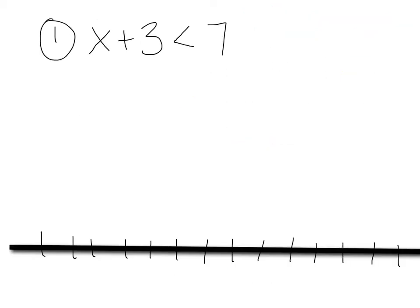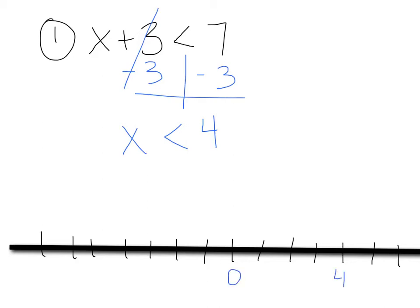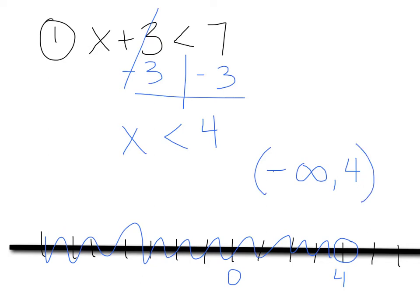Let's try some. This first one: x plus 3 is less than 7. We're going to solve this the same way we solved our equations. The opposite of plus 3 is to subtract 3 from both sides. You get x — we don't do anything to the sign — so less than 4. We didn't flip the sign because we did not multiply or divide by a negative number. Now x is by itself: x is less than 4. We put 0 and 4 on the number line; because it's not equal to, we use an open circle. Numbers less than 4 are to the left, so we shade to the left. In interval notation, answers go from negative infinity to 4; it does not equal either, so we use parentheses.